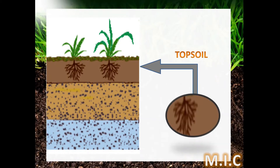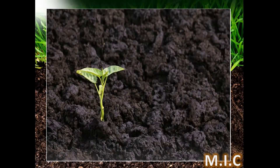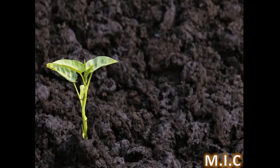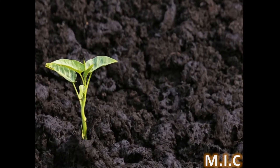And the uppermost layer is called topsoil, which has minerals and some amount of brownish black material formed when plants and animals decay, called humus.